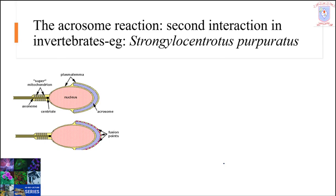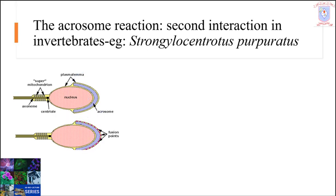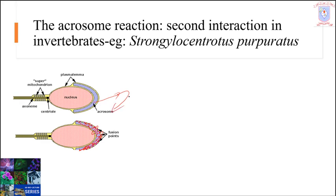The matured sperm of all species, including mammals, possess a structure called the acrosome, and the sperm must undergo the acrosomal reaction — in short called AR — to fertilize the homologous egg. Homologous egg means the egg of the same species. The acrosome is a single large Golgi-derived secretory vesicle found in the anterior head of the sperm. Here you can see the structure of the acrosome marked as the dotted area.